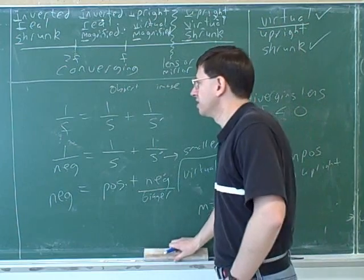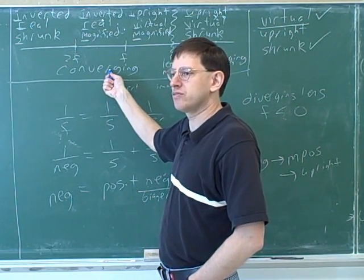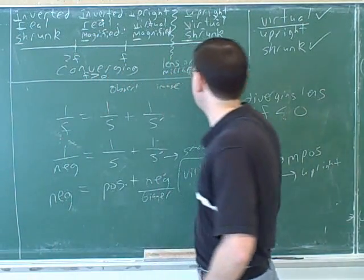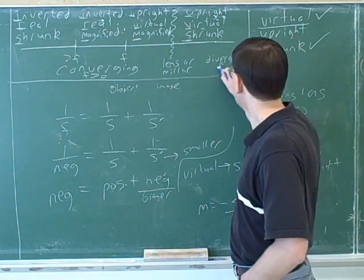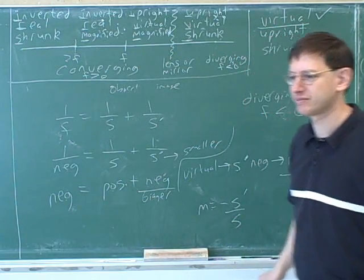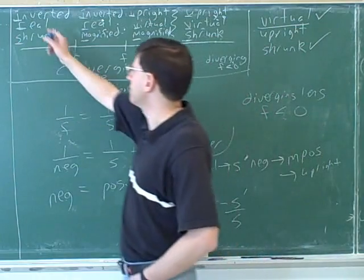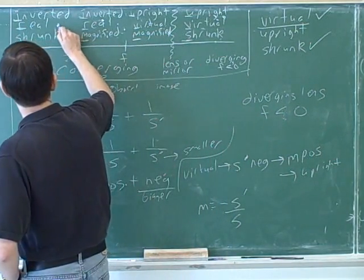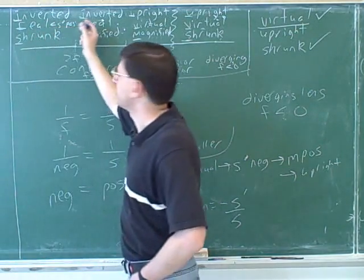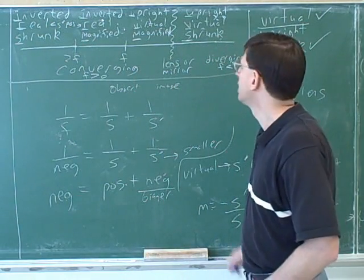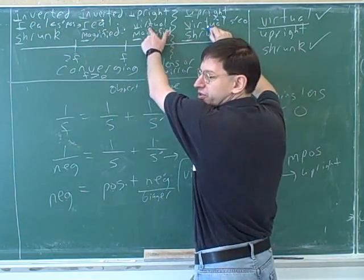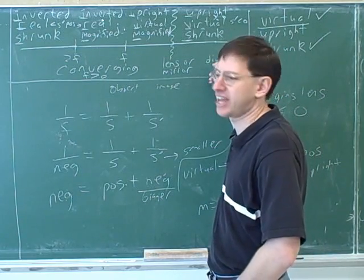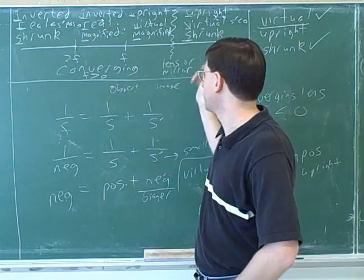Let's go back and improve our table. If you know you have a converging device, that tells you the focal length is positive. If you have a diverging device, that tells you the focal length is negative. We should have put that in our table from the start because it's easy to forget. It's very tempting to say 'it's diverging so the image distance is negative' or 'it's converging so the image distance is positive.' No — converging and diverging tells us about the focal length, not the image distance.